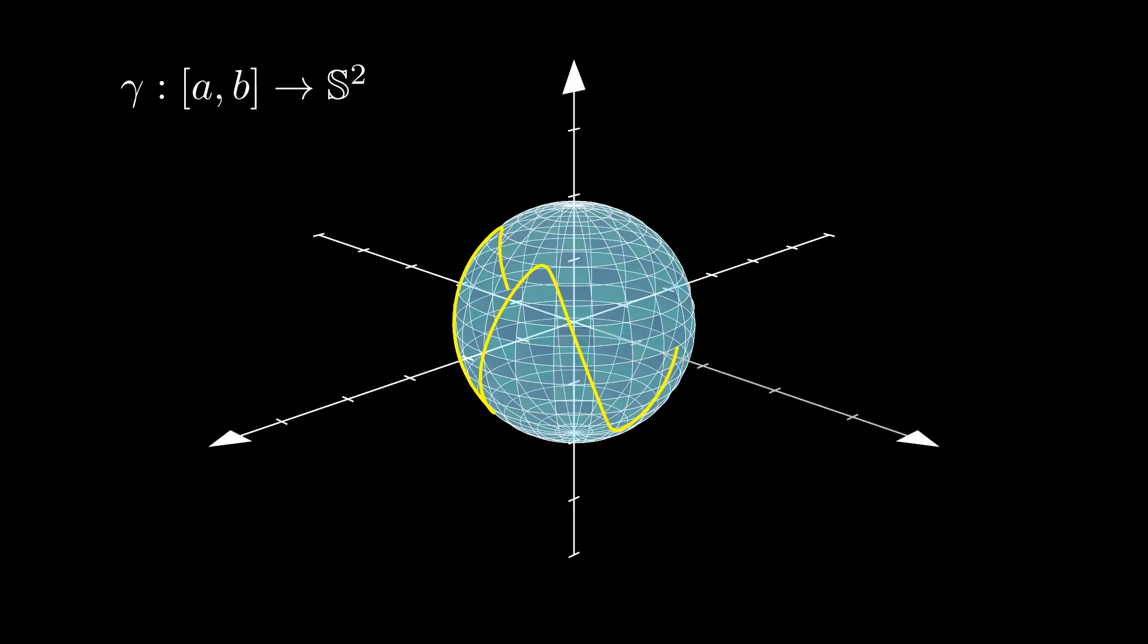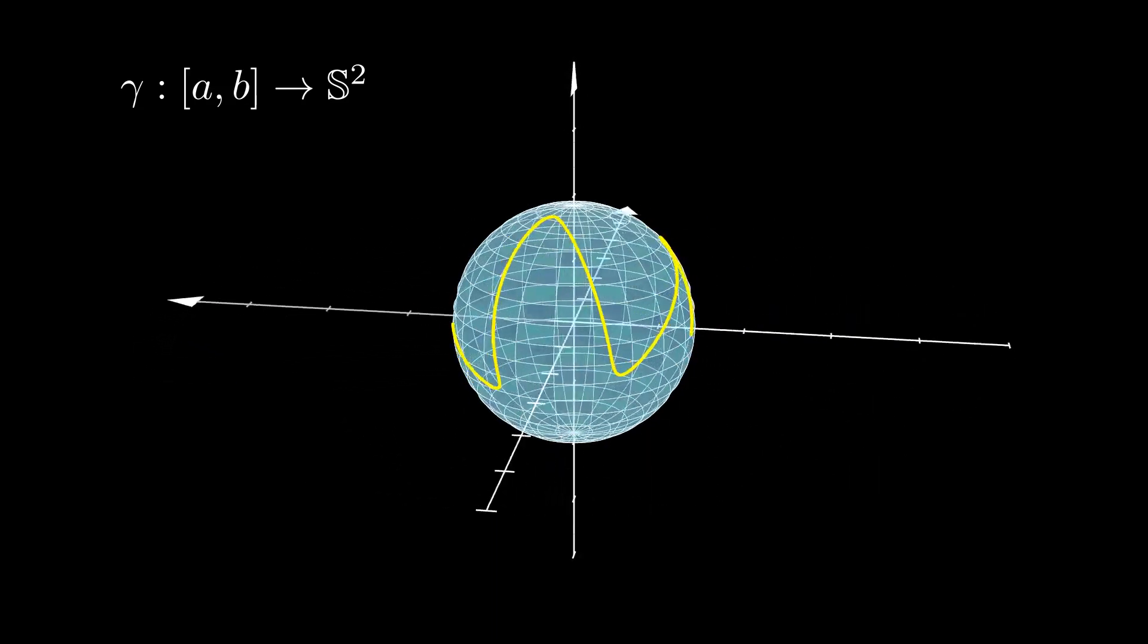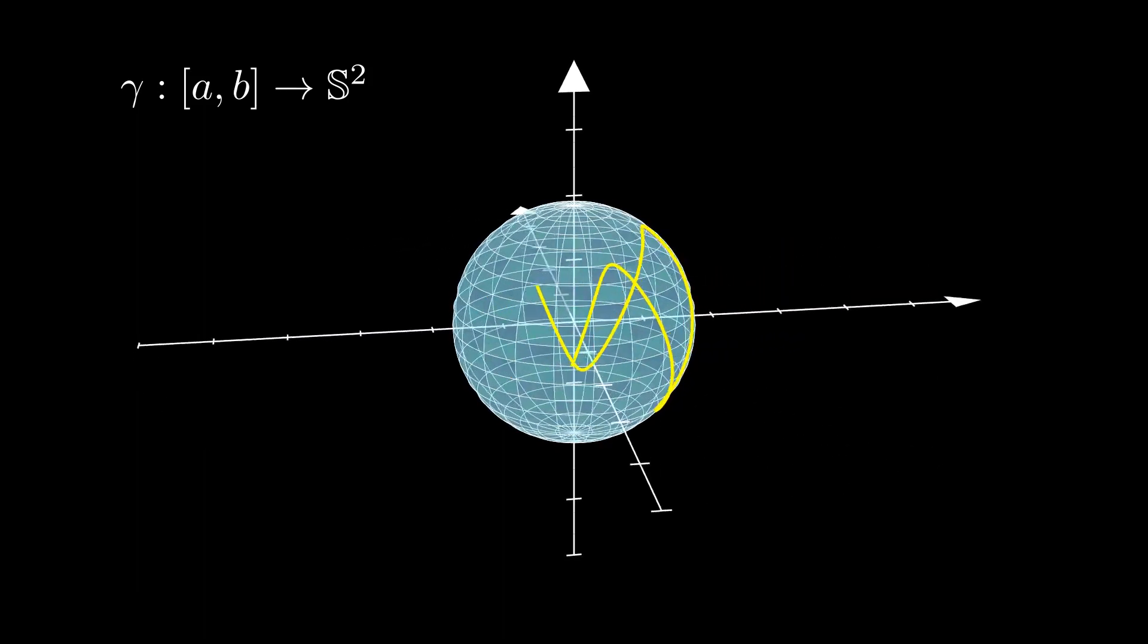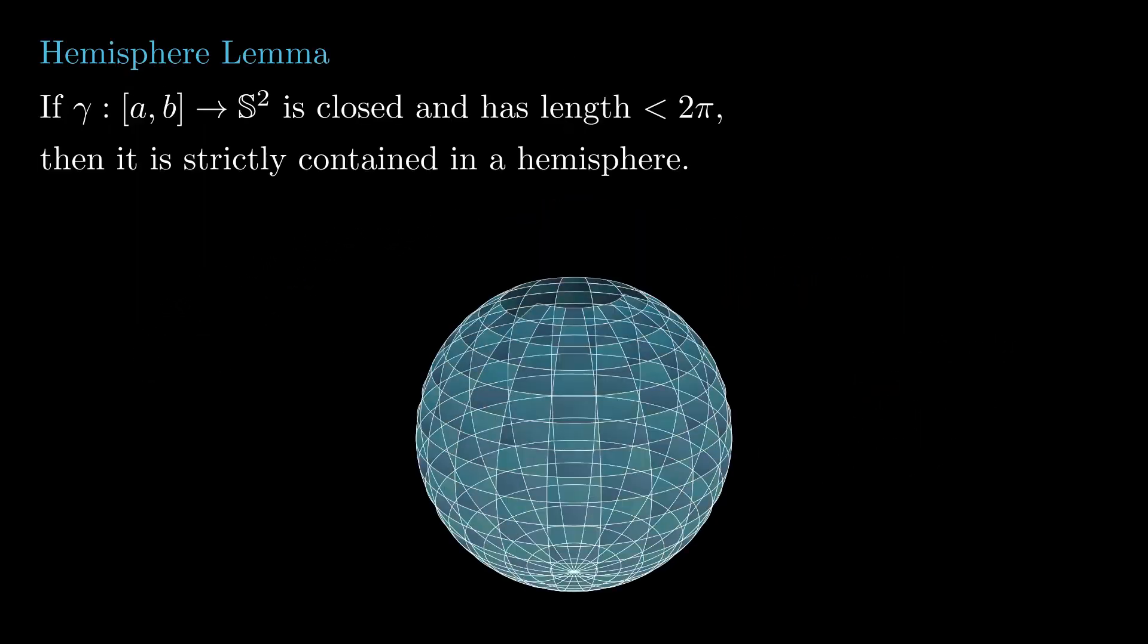One reason we care so much about this kind of curves is that for any piecewise smooth regular curve, its tangent indicatrix is a spherical curve. We will begin this lesson proving a powerful result, the hemisphere lemma.